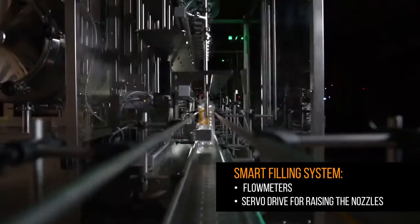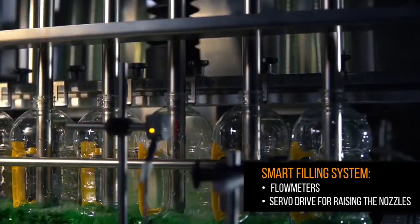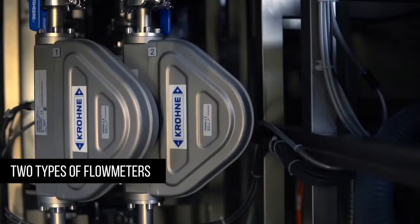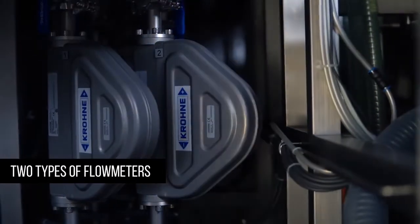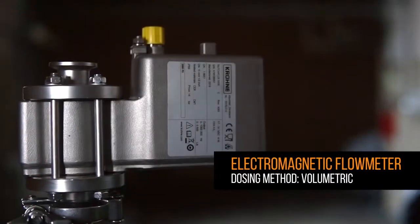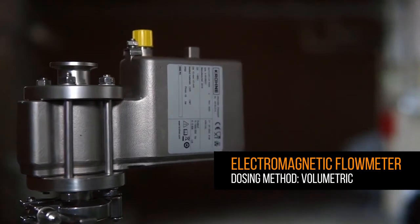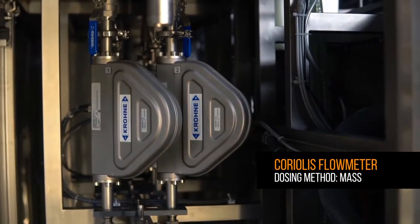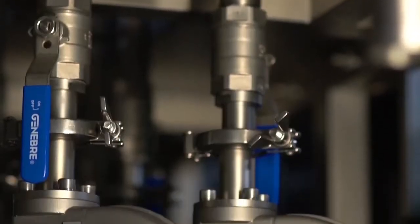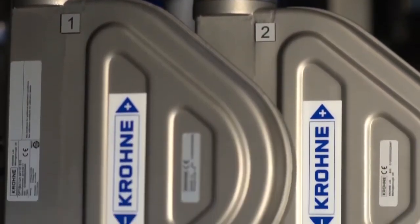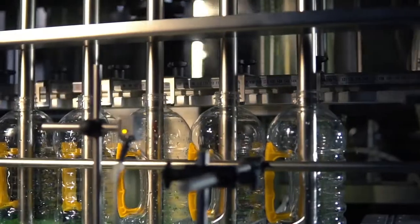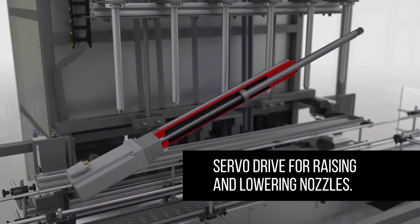The first element of the smart filling system is flow meters. They are of two types: electromagnetic flow meters are used for conductive fluids, while Coriolis flow meters are used for liquids prone to changes in physical properties such as density, viscosity, and volume. The choice of flow meter type depends on the properties of the product.